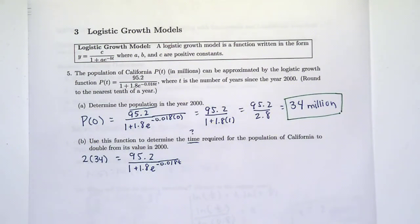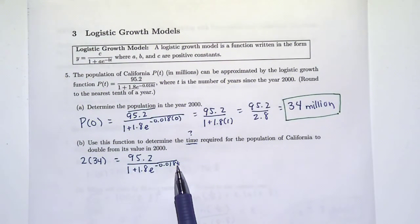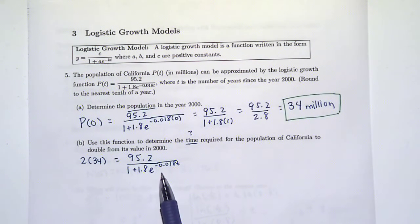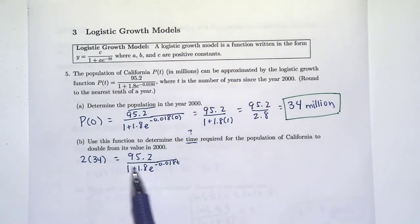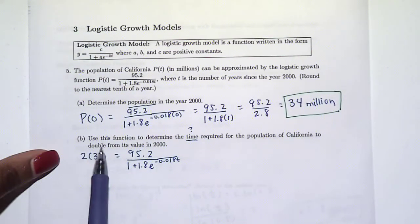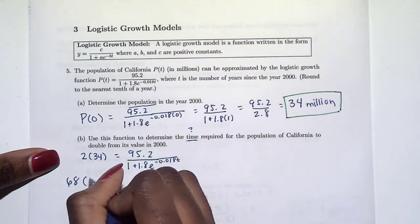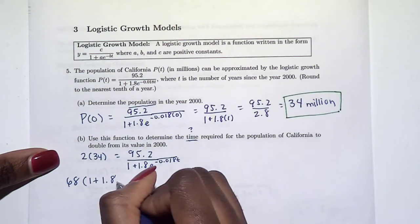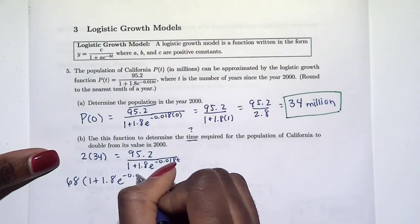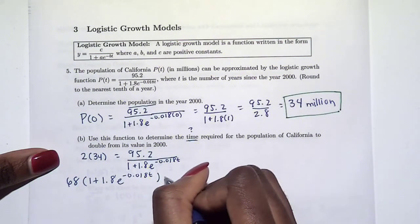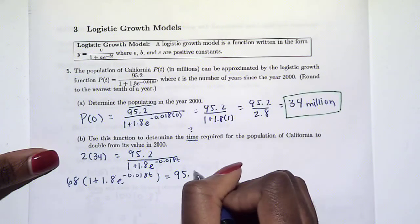Now what's our goal? We need to solve for t. This t is in the exponent here, and we need to isolate it. However, this exponent is in the denominator. I don't like that, so I am going to multiply both sides by this. 2 times 34 is 68, so I'm going to multiply 68 by this denominator.